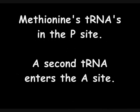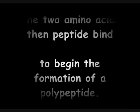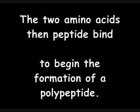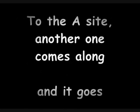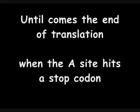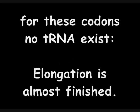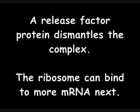Methionine's tRNA is in the P site. A second tRNA enters the A site. The two amino acids form a peptide bond to begin the formation of a polypeptide. The first tRNA leaves the ribosome, and the second one moves over for elongation. To the A site another tRNA comes along, and it goes on and on until the A site hits a stop codon. For these codons, no tRNA exists. A release factor protein then dismantles the complex.